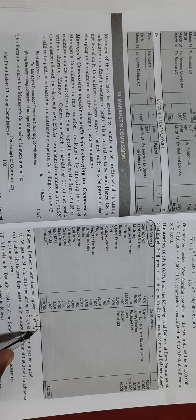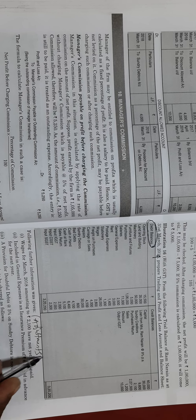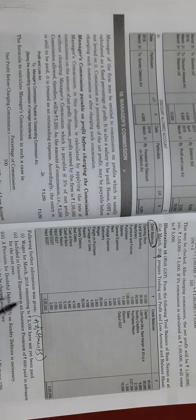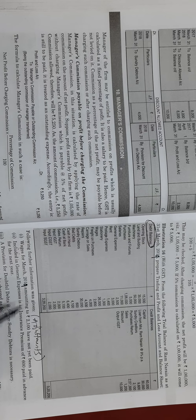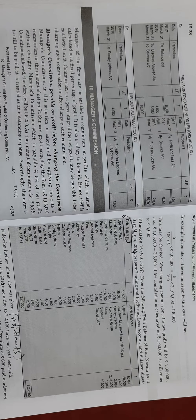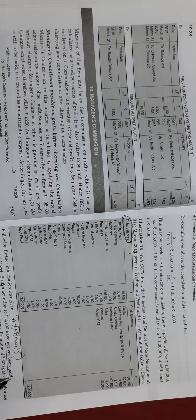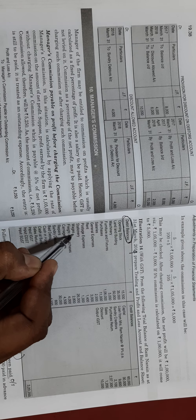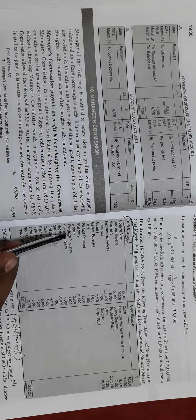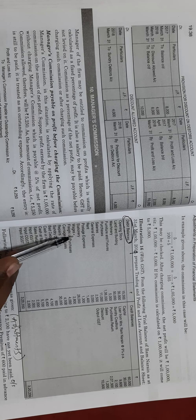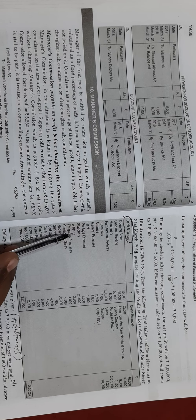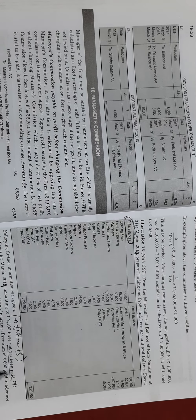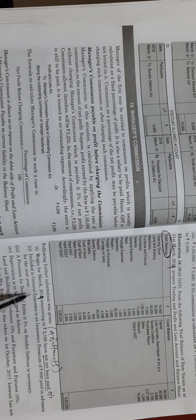Adjustments can also be called additional information and always appear at the foot of the trial balance. The first adjustment is wages for 31st March 2019 amounting to rupees 2,100 which is not yet paid — meaning it is outstanding. Put a dot mark next to wages in the trading account to indicate there is an adjustment, so leave space for it.